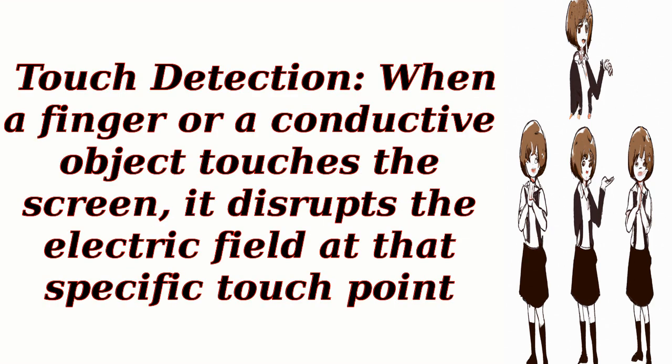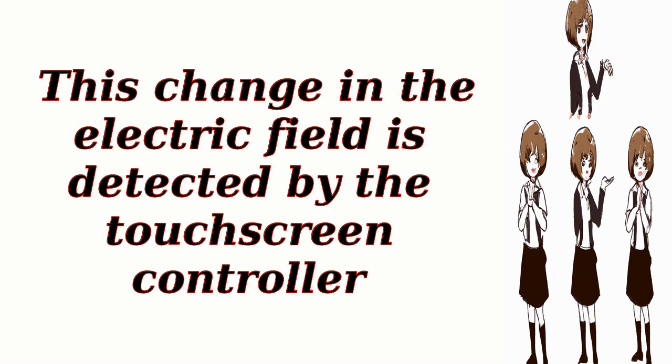Touch detection: when a finger or a conductive object touches the screen, it disrupts the electric field at that specific touch point. This change in the electric field is detected by the touchscreen controller.